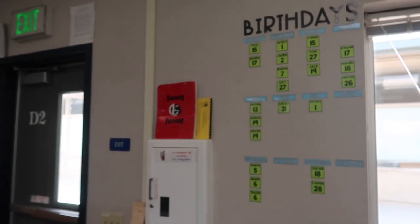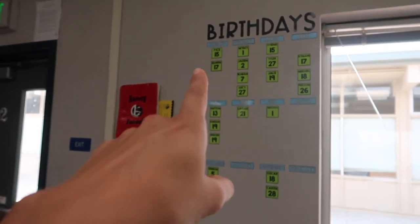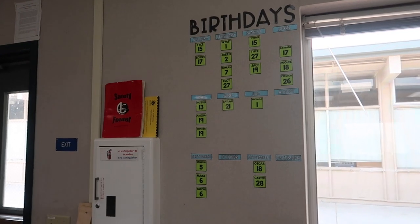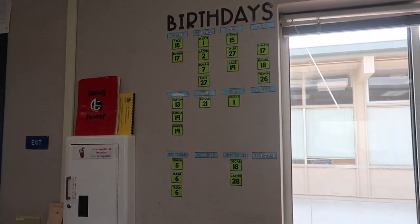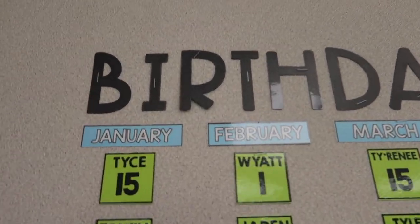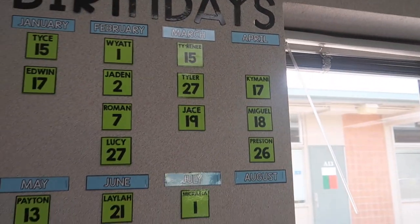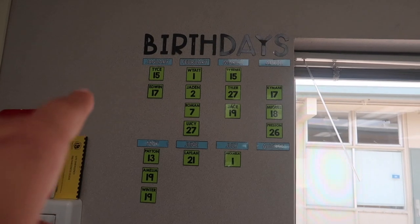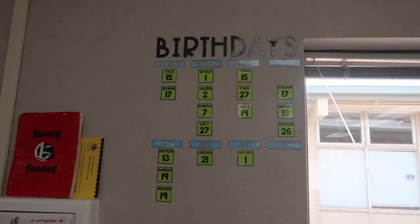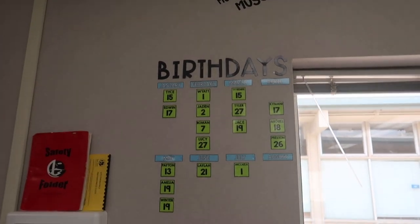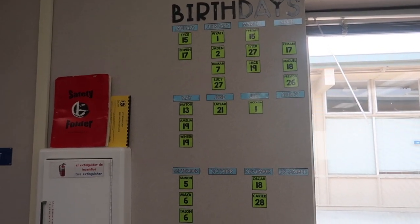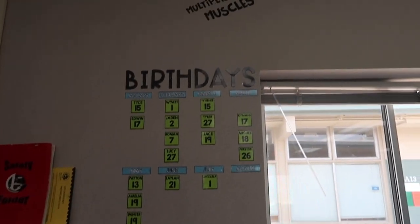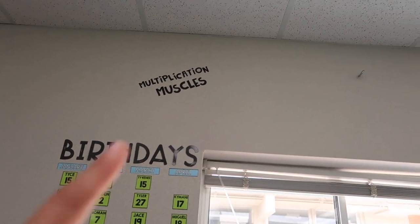So the first thing I did was my birthday board. I created all these on PowerPoint, printed them on colored cardstock, laminated and cut them. I'll have the month here — January, February, March, April — and then the kid's name with the date during that month that they were born. Super easy. I used something similar last year and it's just a really quick way to reference without taking up too much wall space. I put my multiplication muscles title up here, and all the kids' pictures are going to go here.